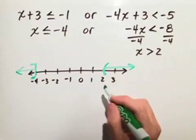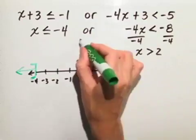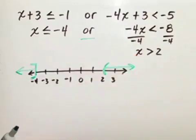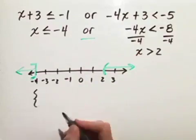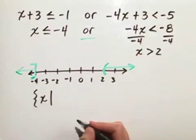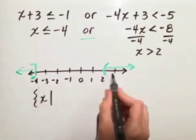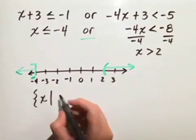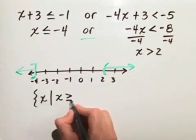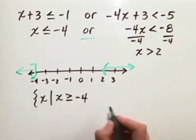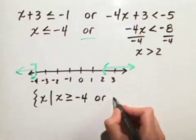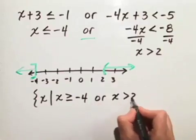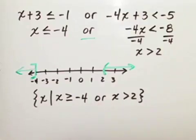Now, how do we write our answer in set builder notation? Because we started with the word OR, we want to write the set of all x such that we have two different intervals here. We have x that's less than or equal to negative 4, or we have values x that are greater than 2. And we express it just like that.